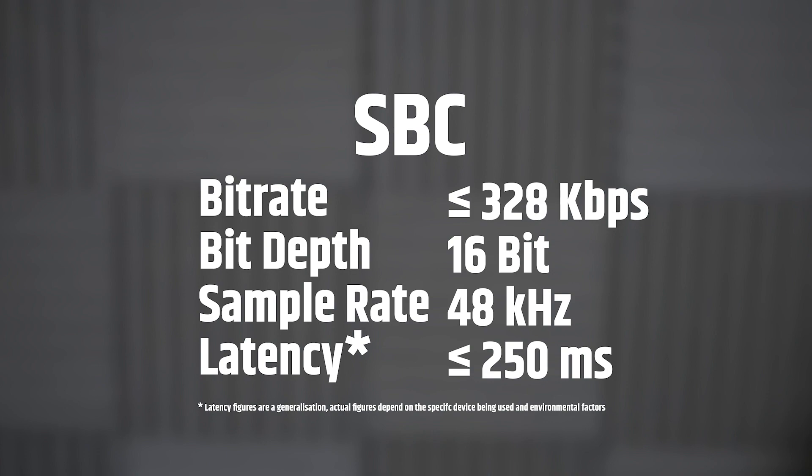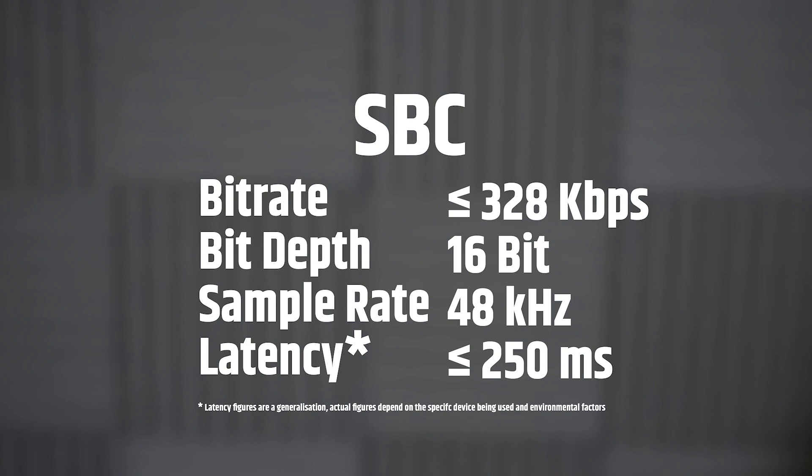The weakness of SBC is that it is a lossy codec with a variable bitrate. Whilst it is theoretically capable of a maximum rate of 328 kbps, a 16-bit depth, and 48 kHz sample rate, its variable nature means this is often not achieved. SBC's uneven application of standards between device manufacturers makes it a rather hit-or-miss experience. Whilst SBC is available on all Bluetooth devices, it should really only be used when there are no other options. You can expect latency of up to 250 milliseconds, though this is quite variable.